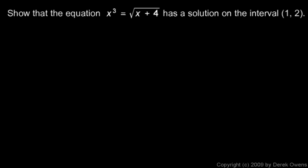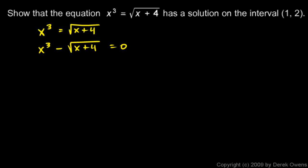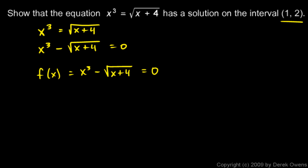Here's another example: show that the equation x cubed equals the square root of x plus 4 has a solution on the interval 1, 2. How will we tackle this? Let's take the equation x cubed equals the square root of x plus 4, and transpose it so it reads x cubed minus the square root of x plus 4 equals zero. Now think of the left side as a function: f of x equals x cubed minus the square root of x plus 4. We just have to show that it has a zero on the interval 1, 2.